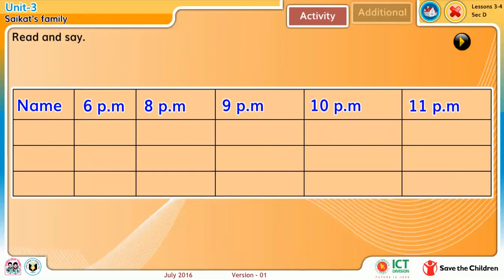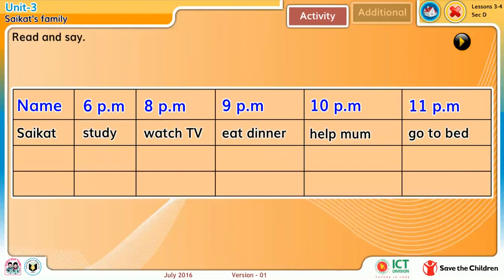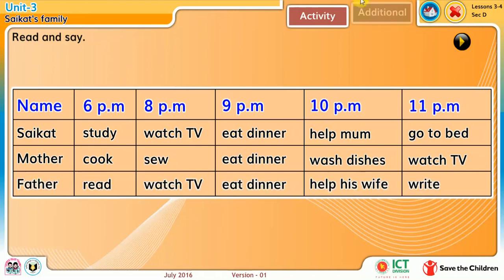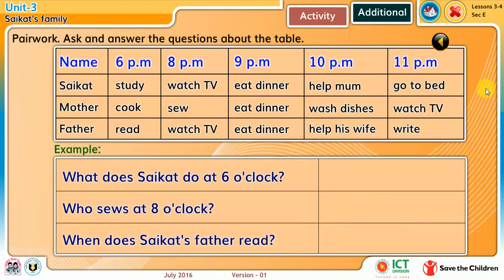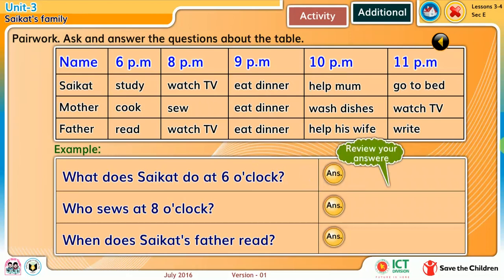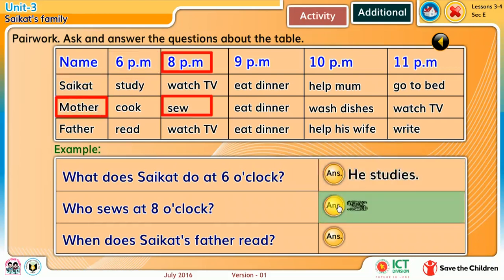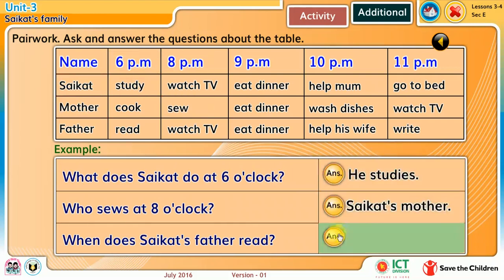Read and say. Ask and answer the questions above the table. What does Shurikot do at six o'clock? Who does things at eight o'clock? When does Shurikot's father read? He studies. Shurikot's mother at six o'clock.